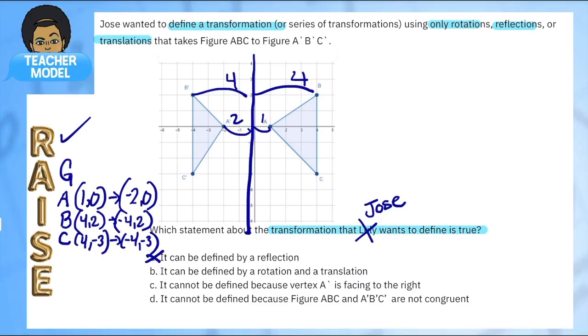So that doesn't work. So it cannot be a reflection at all. And just by looking at it, because it's not a reflection, I know it also can't be a rotation because a rotation would not change the size of it. It would still be congruent. So it cannot be a rotation and a translation because they are not congruent. Does C make any sense? It cannot be defined because vertex A prime is facing to the right. It has nothing to do with this situation.